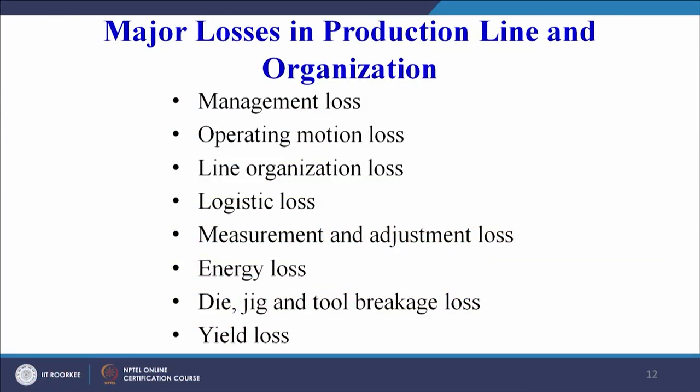Additional losses include scheduled downtime losses, management losses, operating motion losses, line organization losses, logistics losses, and measurement and adjustment losses. There is a long list of losses in production lines and organizations. The target of Total Productive Maintenance is to ensure that these losses are minimized, reducing breakdown of the production line to the greatest possible extent in order to make the organization more efficient and profitable.